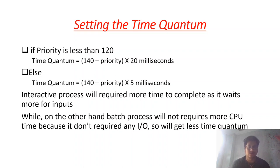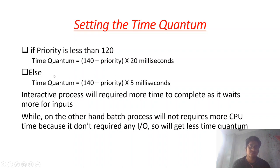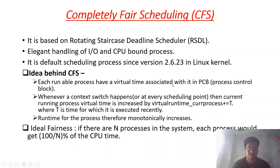Interactive processes will not use all their time quantum to run — they wait for events to happen and then execute. That is why the time quantum for interactive processes is higher. CPU bound or batch processes run in one go and use all their time quantum, so they get a lower time quantum.